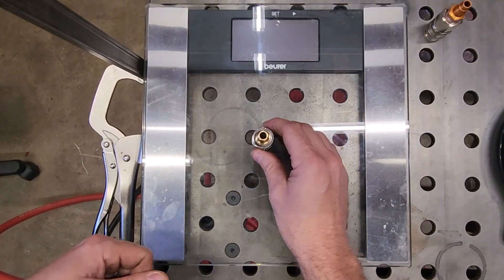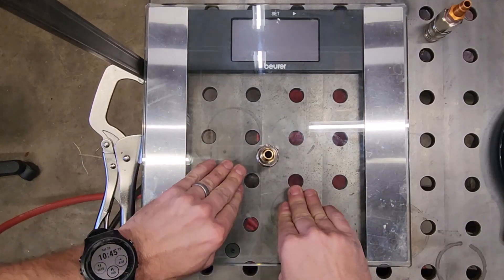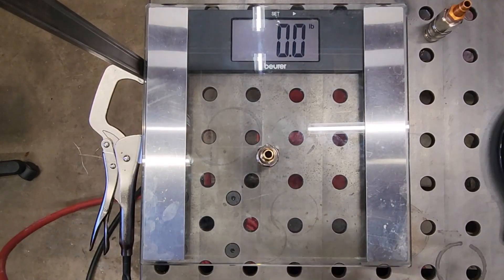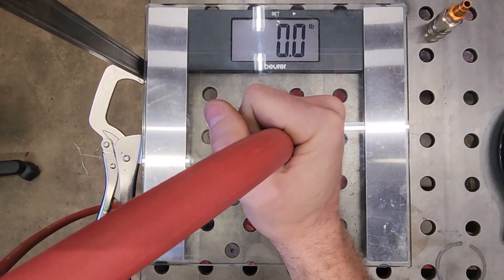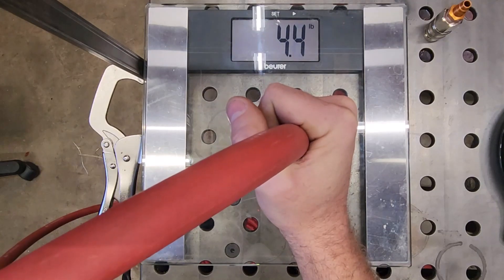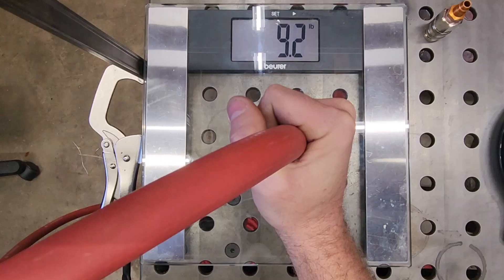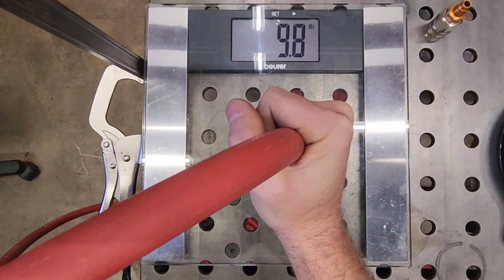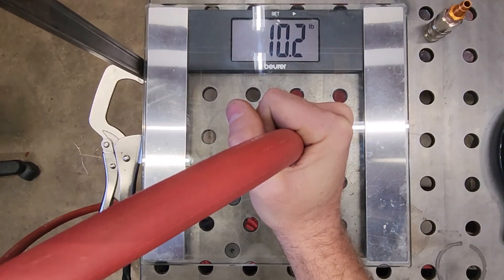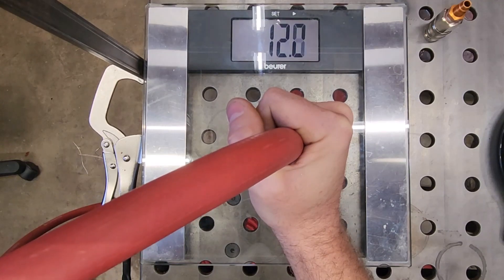So let's start with the Milton Universal coupler and the V-style plug. I'll try to push down as evenly as possible and slowly so we can watch the scale climb. So you heard something there, but that wasn't final engagement. That was just the first stage, so we'll keep going.